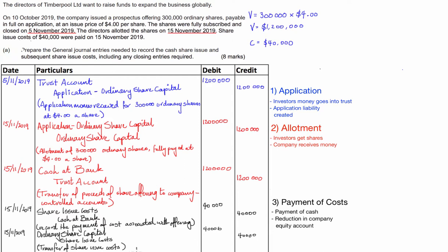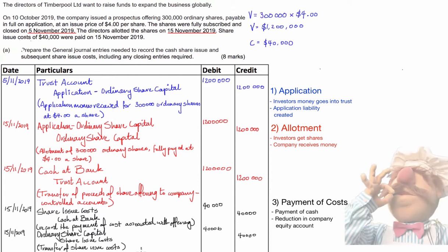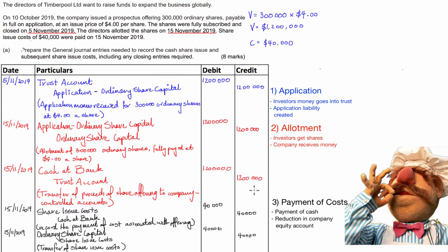If you get to this point at the bottom, you're finished — you have successfully prepared the journal entries required to record the cash share issue and subsequent share issue costs for Timberwool Ltd. Questions like this take a bit of practice. You have to go over and over again so you remember these three steps and what to do at each step. But it's not overly complicated if you remember the three steps — you just have to make sure you don't make any silly mistakes with your entries.